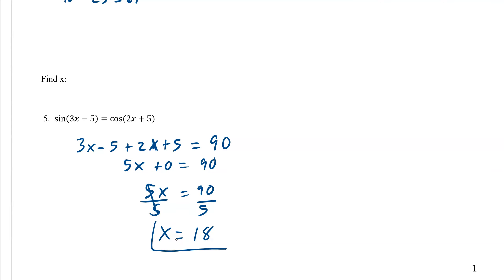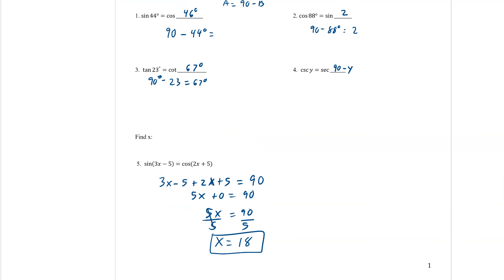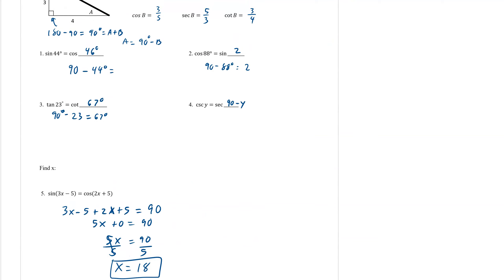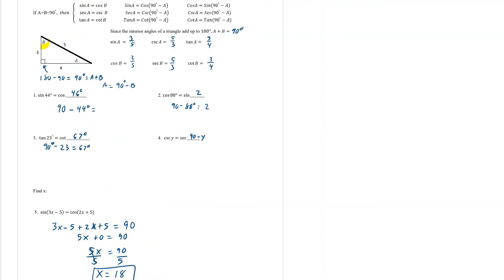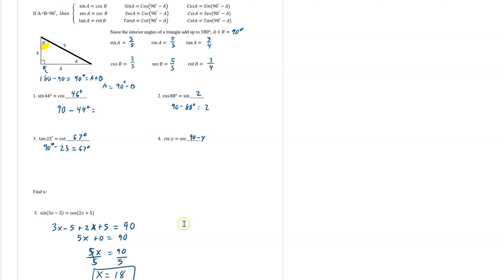And there you go. We just found x. So the whole idea is with sine is equal to cosine, cosecant is equal to secant, or tangent is equal to cotangent, we know that their angles are complementary, that they add up to 90. If they ask you to find the cofunction, they just want you to find the co of whatever is given. So cotangent of 67 degrees is the cofunction of tangent of 23 degrees.